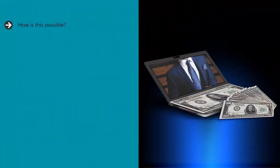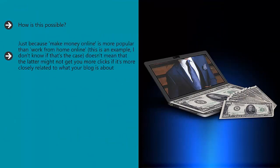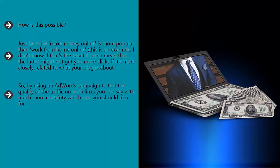How is this possible? Simple — by using AdWords to be the sponsored link on a few different search terms and to see which ones bring you the most traffic and the most clicks or sales. Just because 'make money online' is more popular than 'work from home online' (this is an example — I don't know if that's the case) doesn't mean that the latter might not get you more clicks if it's more closely related to what your blog is about. So by using an AdWords campaign to test the quality of the traffic on both links, you can say with much more certainty which one you should aim for.